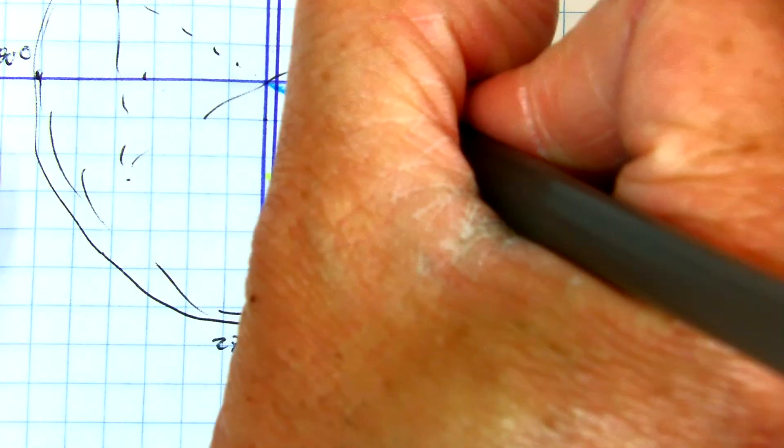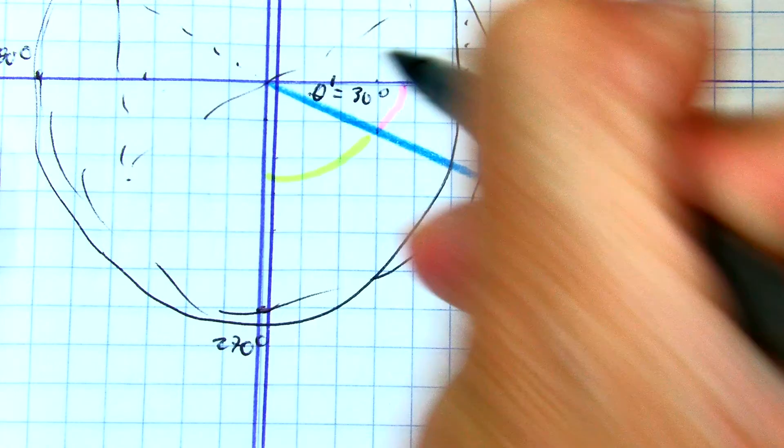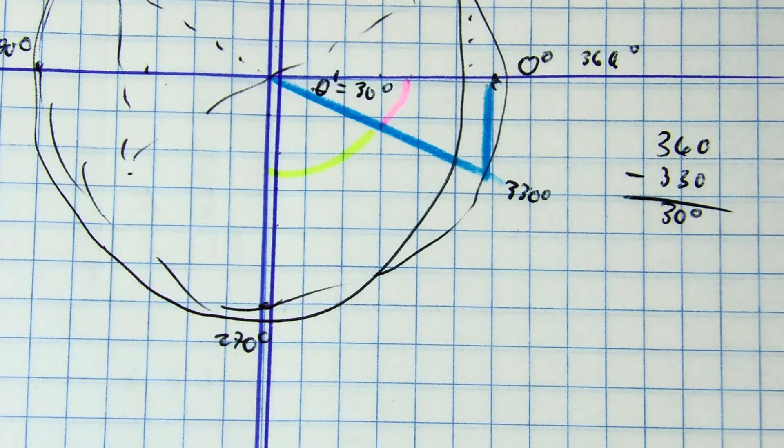That's actually the answer. Theta prime equals 30 degrees. This is a 30-60-90 triangle.